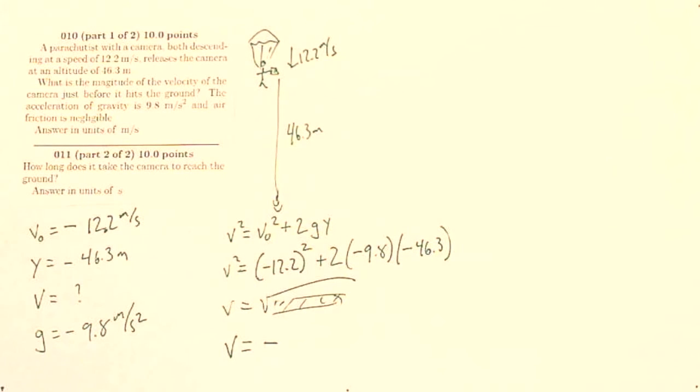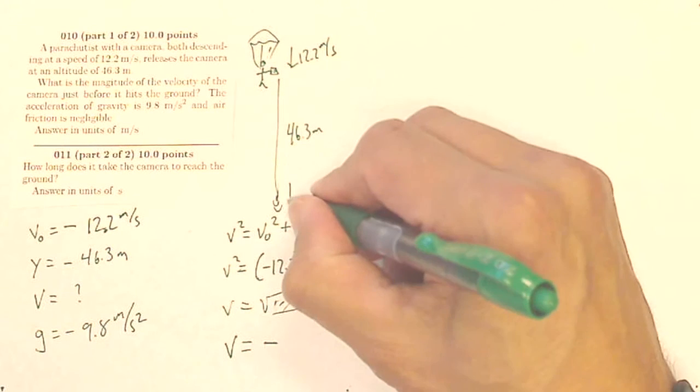So my true answer for the velocity is going to be negative, but when I enter it into UTexas, it's asking for the magnitude, so I'm going to leave it as a positive. But really it should be negative because it's going to have a velocity down.